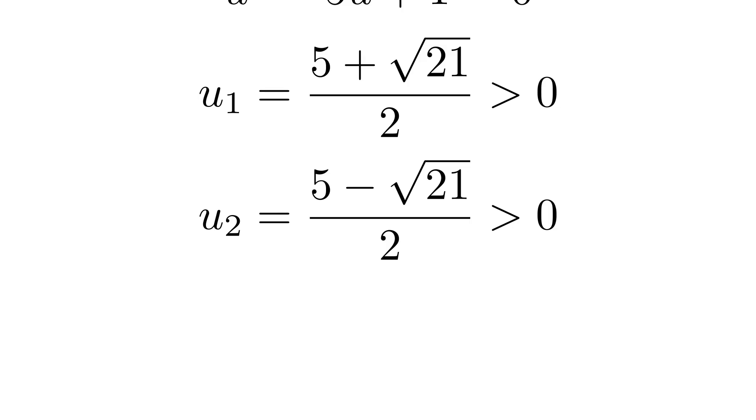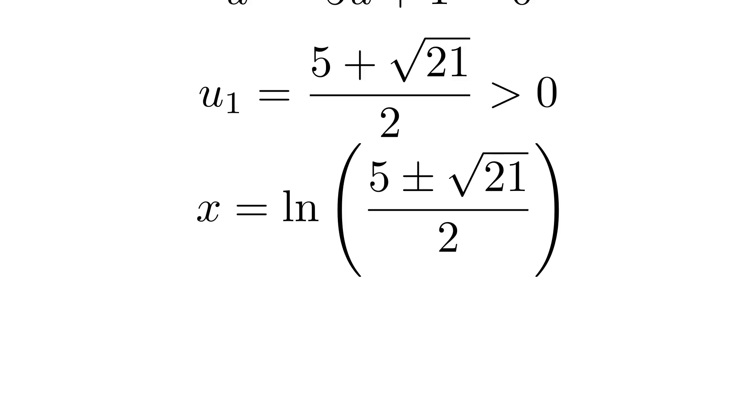Since u equals e to the x, we have e to the x equal to each of our two solutions. To solve for x, we need to undo that exponential. The way to do that is with the natural logarithm, which is the inverse of the exponential function. Taking the natural log of both sides gives us our final answer for x.